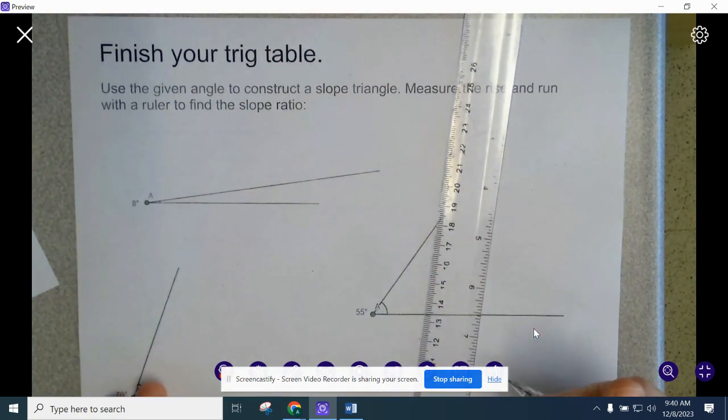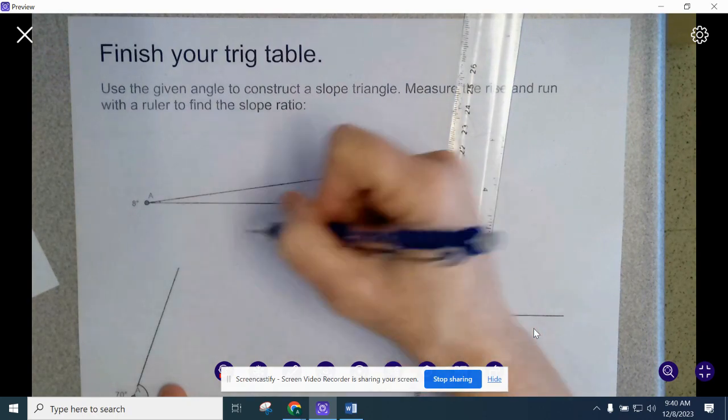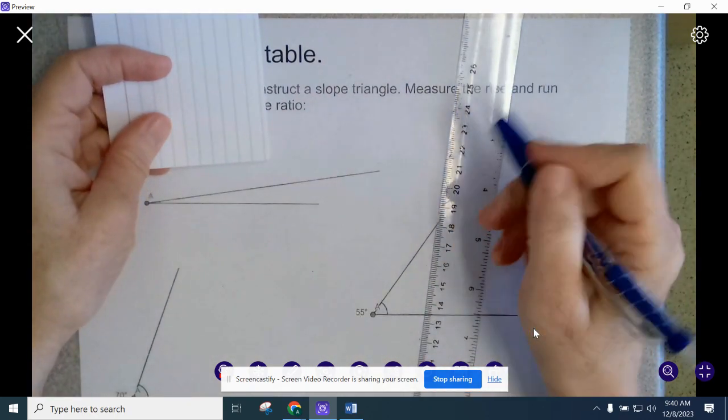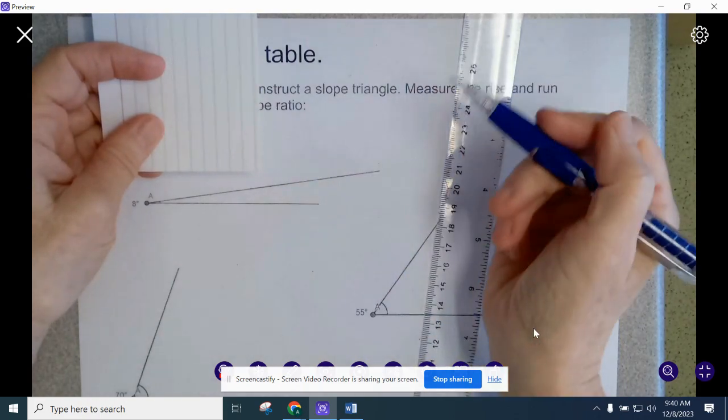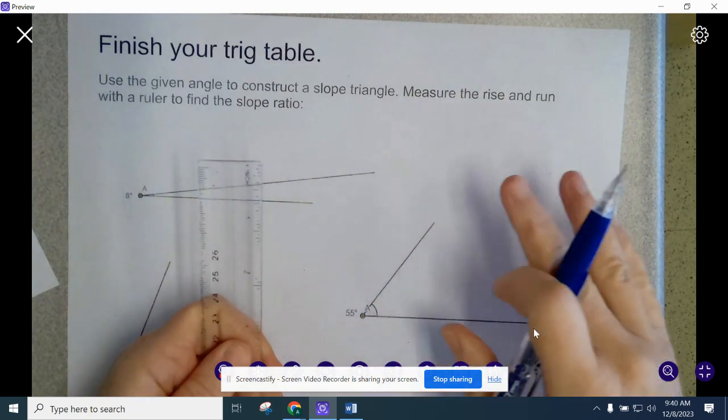So we need a slope triangle. To have a slope triangle, we need to draw in our rise, and then we need to measure our rise and our run. So you can take anything that already has a pre-cut 90-degree angle, like a piece of cardstock, or you can use the bottom edge of your ruler.